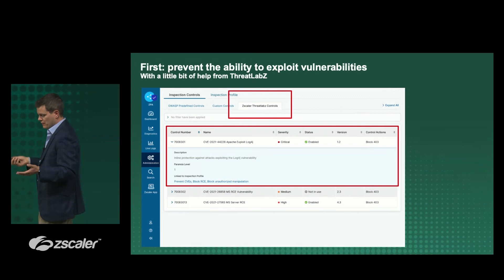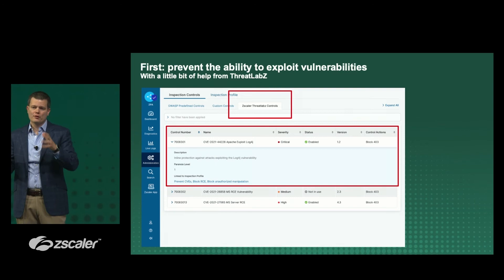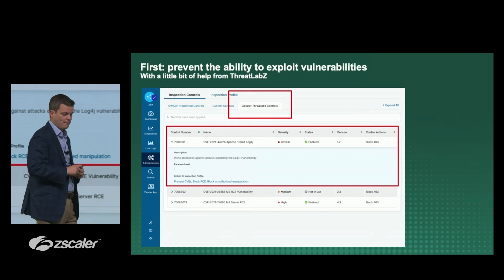As many remember from not too long ago — log4j — with application protection capabilities, one addition is the ability to have the ThreatLab Z team push Zscaler signatures into those devices. This will help get ahead of day-zero attacks by providing additional controls in place.